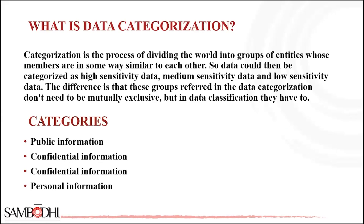Then comes data categorization. Categorization is the process of dividing the world into groups of entities whose members are in some way similar to each other. Data could then be categorized as high sensitive data, medium sensitive data, and low sensitive data. The difference is that these groups referred to in data categorization don't need to be mutually exclusive, but in data classification they have to be.